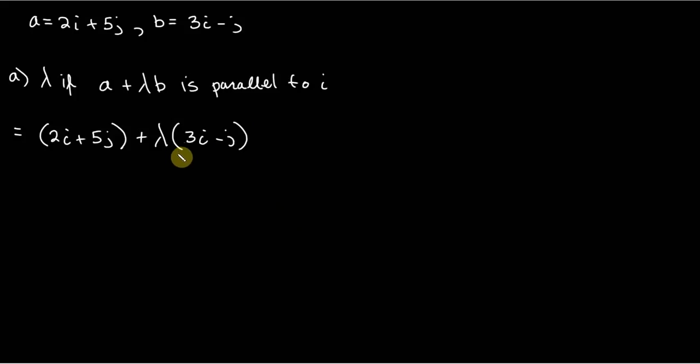And we can now just use the distributive property here. I'm just going to multiply across, multiply lambda across. So that will be the second line. We have 2i plus 5j plus, and we're just going to multiply lambda across. So what will that give us? That will give us 3 lambda i minus lambda j.